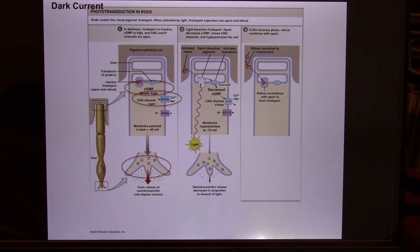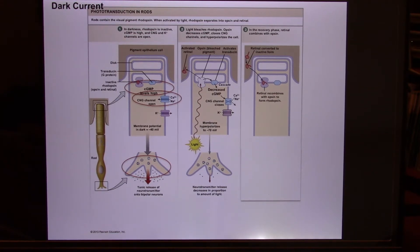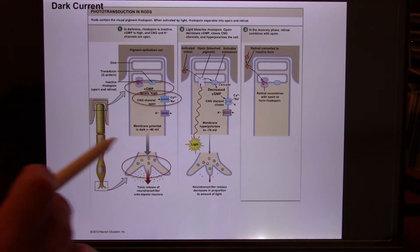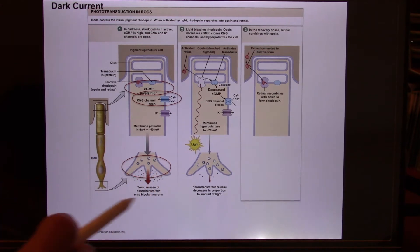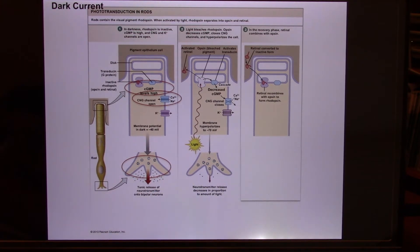Rods and cones don't follow the traditional rule. The traditional rule is when you have a signal — a first messenger — you bind with the receptor, trigger the second messenger, eventually depolarize the cell, and release neurotransmitter. So more signal, more neurotransmitter release. But rods and cones don't follow the rule. They create a dark current: when there is no light, they actually release a lot of neurotransmitters. When there is light, they release almost nothing. They totally reverse it — that's called dark current.